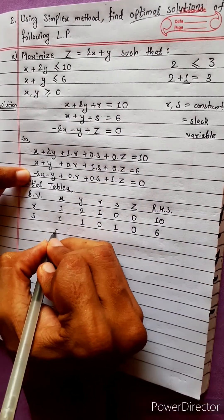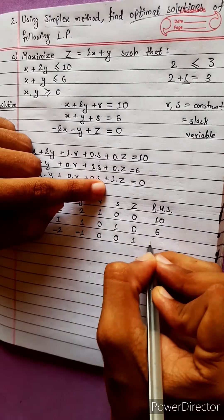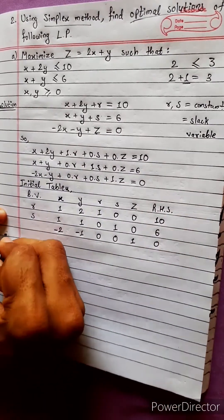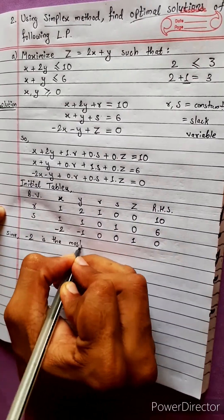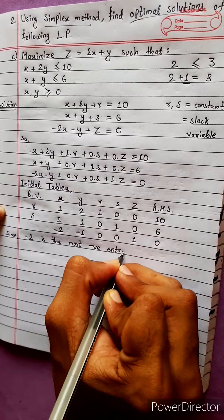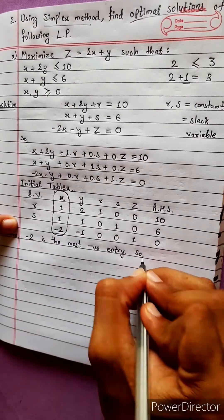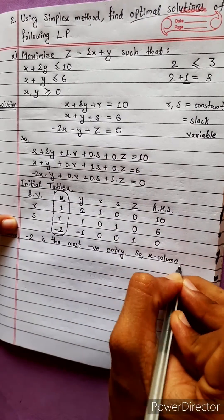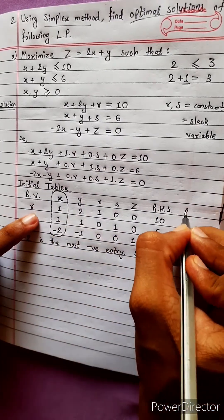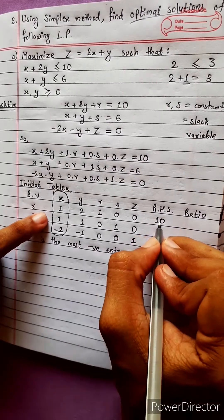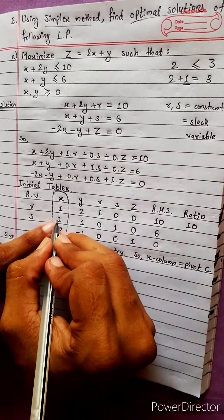Now looking at the objective row: minus 2 is the most negative entry. So x is the pivot column, x column equals the pivot column. Now we compute the ratio — divide RHS by pivot column entries: 10 divided by 1 equals 10, and 6 divided by 1 equals 6.